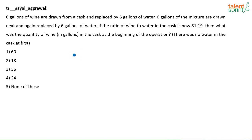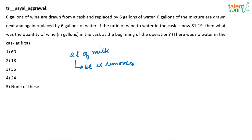If there is a cask or a vessel which has A liters of any liquid — let's say milk, it is a generalized formula, milk or wine or whatever — A liters of that pure liquid, nothing else. Basically one liquid is there. And from this I am removing B liters. B liters is removed and replaced with another liquid, say water — B liters is removed and replaced with B liters of water.